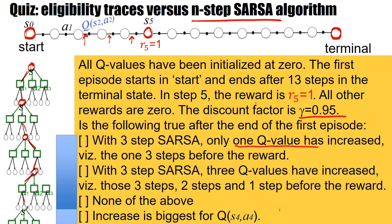The third possibility is none of the above. Take a moment to think about the algorithm, taking into account that all Q-values have been initialized at 0. Please pause the video if you still want to think. The answer is: only the second answer is correct. With three-step SARSA, three Q-values are increased — the three before the reward.